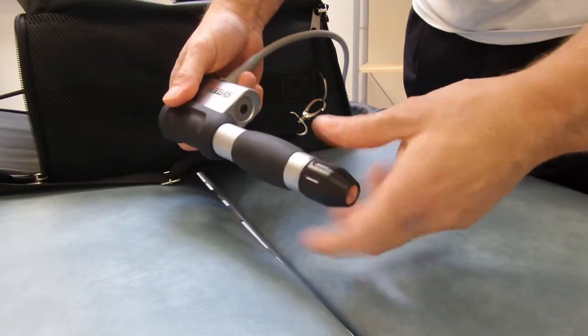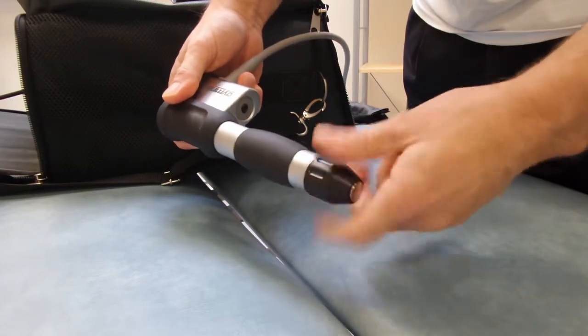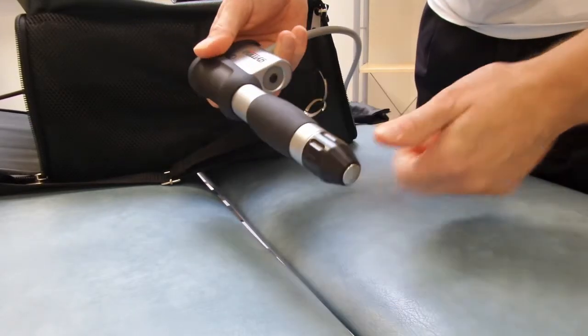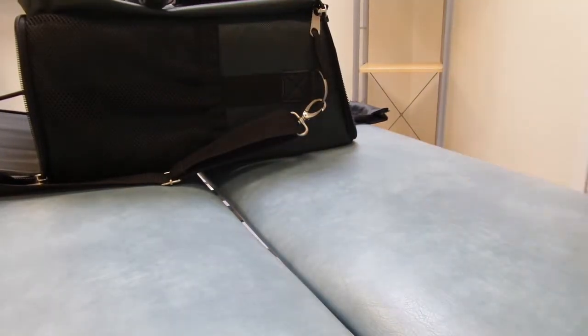Start by removing the 20 millimeter head and replace it with a 15 millimeter convex head. You can tell this is the convex head because it's got the silver tip and not the copper tip.